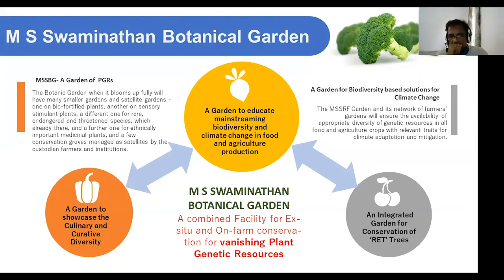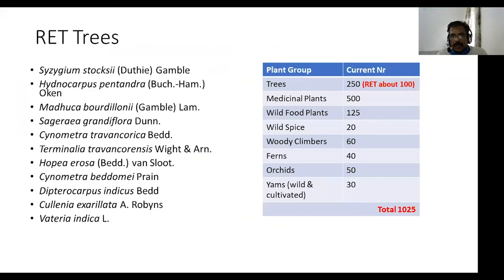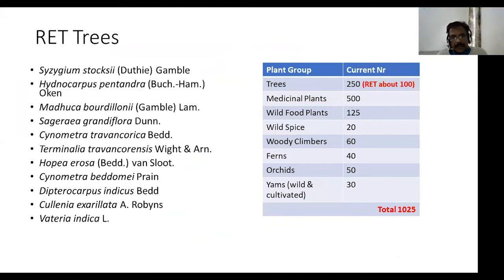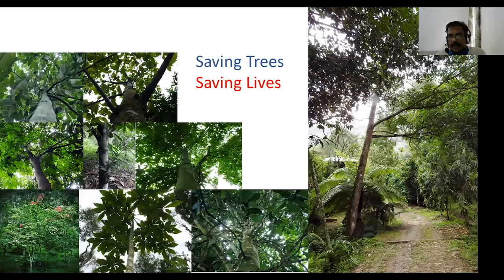The garden is a combined facility for ex-situ and on-farm preservation of RET species, particularly RET tree species. We have approximately 250 tree species, 500 species of medicinal plants, and altogether over 1,000 plant species. At one point, the total number reached 1,800 species, though some have been lost for various reasons. Several critically endangered tree species are grown here — all IUCN RET-listed category species.